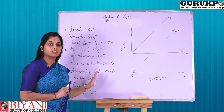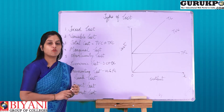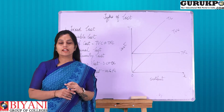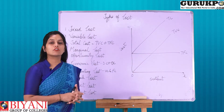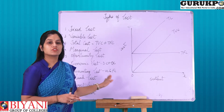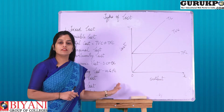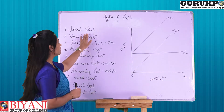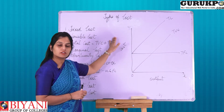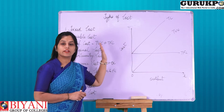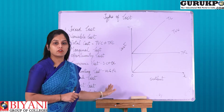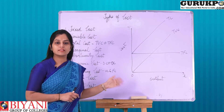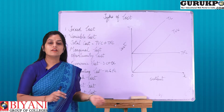Now we will discuss all these costs one by one. The first is fixed cost. What do you mean by fixed cost? As the name says, fixed — that means it is fixed. Fixed cost is the cost which remains fixed whether there is production or no production. These costs will be incurred by the producer or the owner whether production is there or not, and these costs are compulsory to pay.